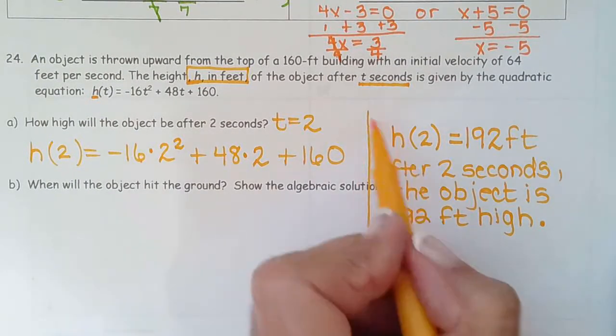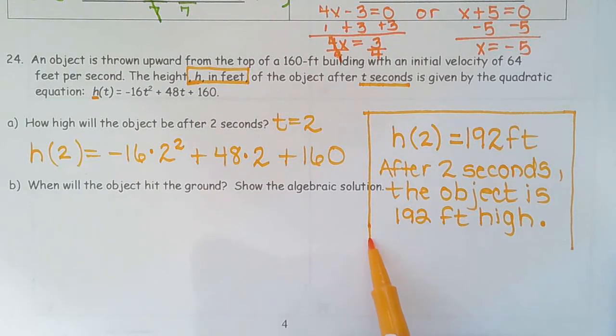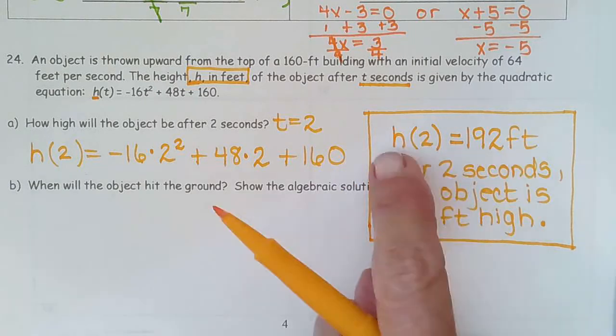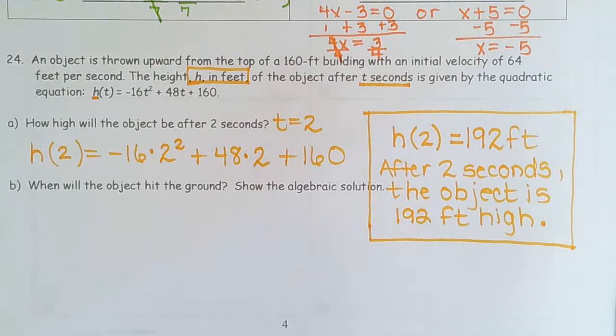So depending on what they want, Alex could just want an answer with the units or it could want a sentence or it could want both like it did on the last test. So this would be the answer. This would be writing about what the answer represents.